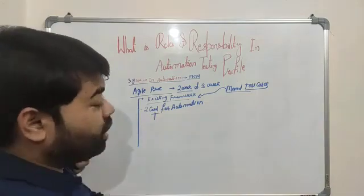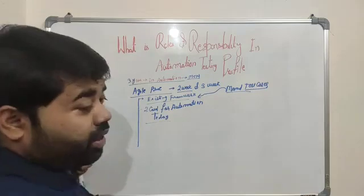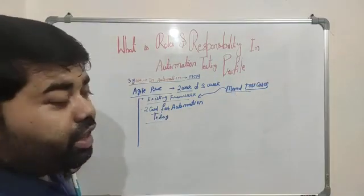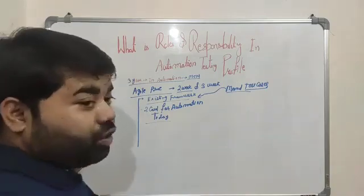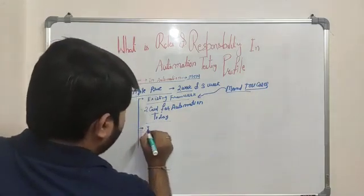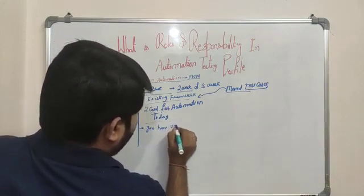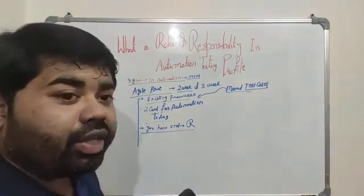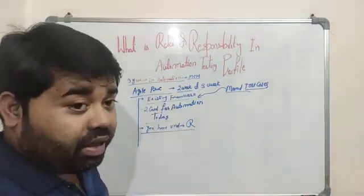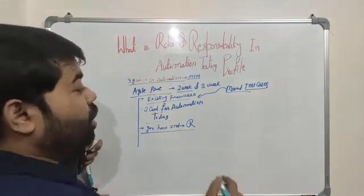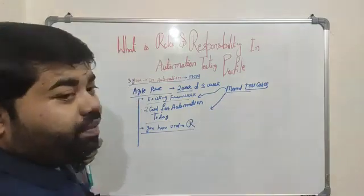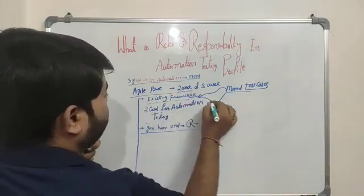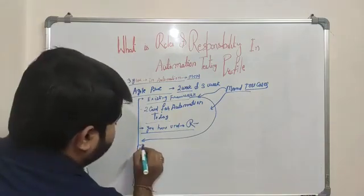Your sprint is going to start today and you have two manual cards — this is just an example, it totally depends on your test case complexity. First of all, you have to understand the requirement. You cannot just start writing everything. Without understanding the requirement, please do not start your automation work, otherwise you will get stuck in the middle. You have to know the manual flow very well before you start automation.